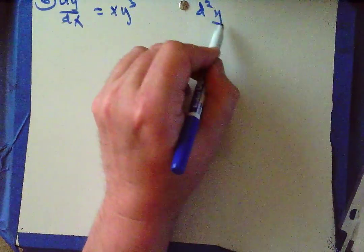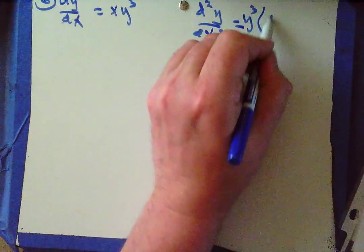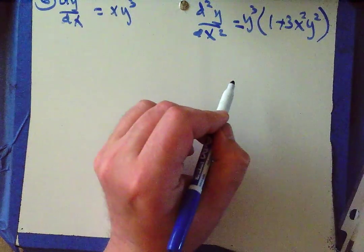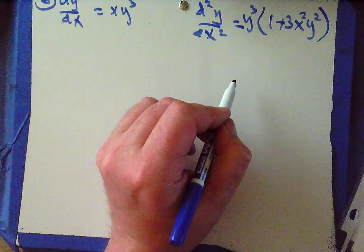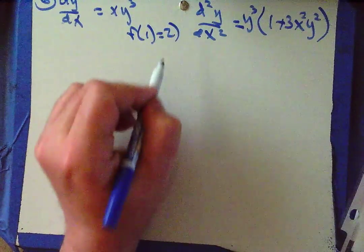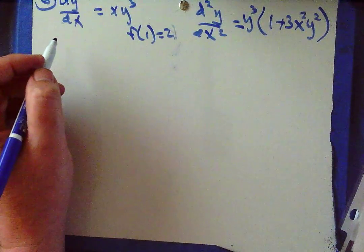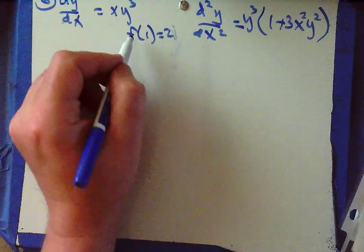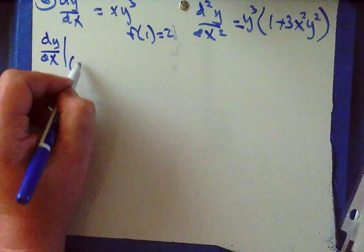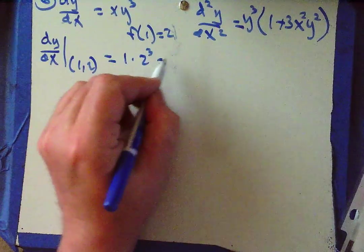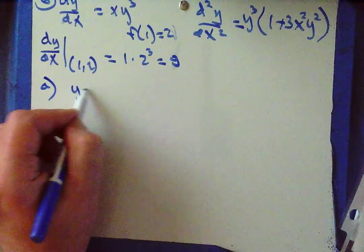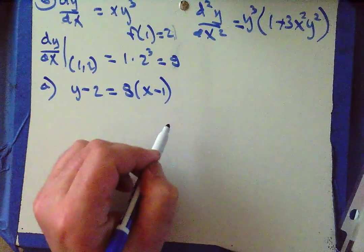Problem 6: solutions to the differential equation also satisfy dy/dx equals xy³, and the second derivative is y³(1 plus 3x²y²). Let y be the solution where f(1) equals 2. Part a: find the tangent line at x equals 1. We've got an ordered pair; we just need the slope. dy/dx evaluated at (1, 2) is 1 times 2³, which is 8. So the tangent line is y minus 2 equals 8(x minus 1).